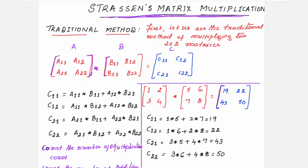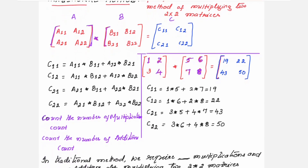We can verify with an example: taking elements 1, 2, 3, and 4 as the elements of matrix A, and 5, 6, 7, 8 as the elements of matrix B. When we multiply using this traditional method, we get 19, 22, 41, 50. That is, C11 is 19, C12 is 22, C21 is 43, and C22 is 50.